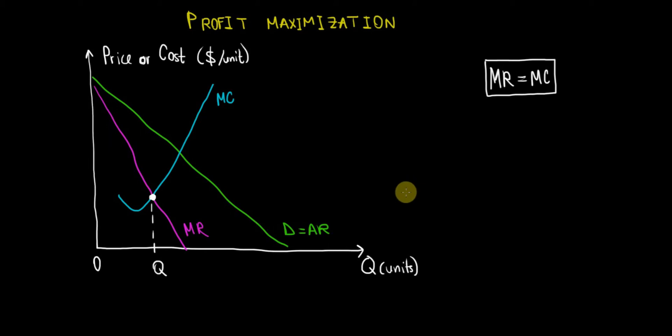In this video I would like to explain the concept of profit maximization both intuitively and on the graph. So let's start. Now I will start with this. The point of profit maximization will happen when the marginal revenue is equal to the marginal cost.